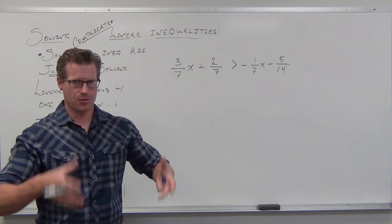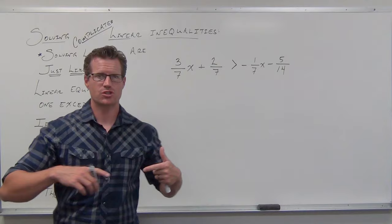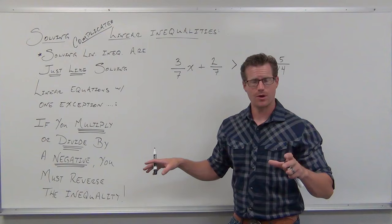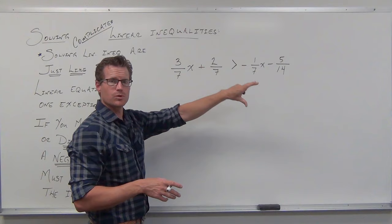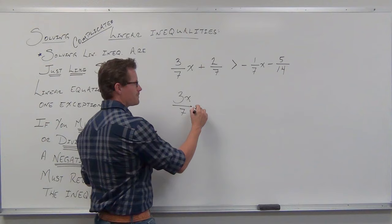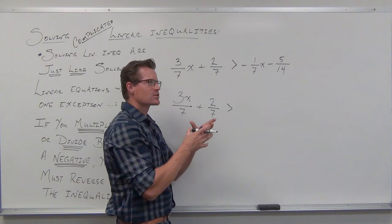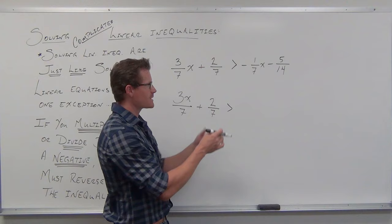I kind of promised you something: everything that works for linear equations works for linear inequalities — there's just one additional rule. If you multiply or divide by a negative, you must reverse the inequality. When we dealt with linear equations with fractions, the first thing I said was make everything a fraction — float all your variables up to numerators. Instead of 3/7 x, we can make 3x over 7 plus 2/7. The inequality sign — greater than — just leave it. It acts just like an equation with that one exception, and we want our variable on the left-hand side.